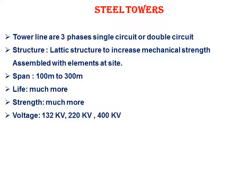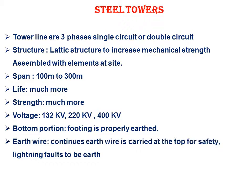The voltage level used with steel towers is 132 kV, 220 kV, and 440 kV for high voltage transmission. The bottom portion footing is properly earthed. An earth wire is placed on top of the tower for the safety against lightning, since there are more chances of lightning striking a tall tower.